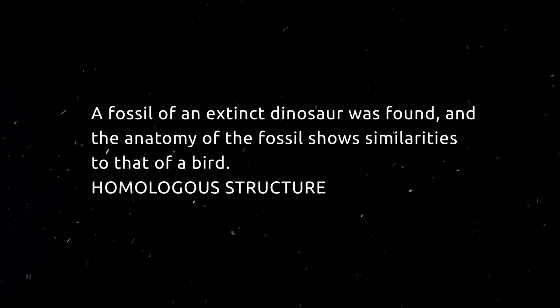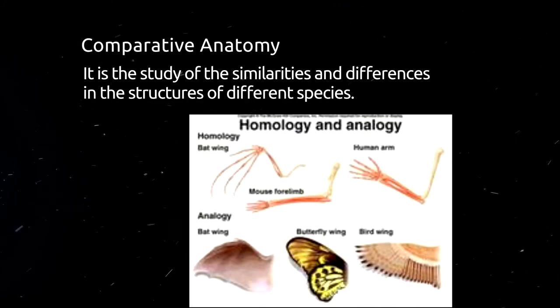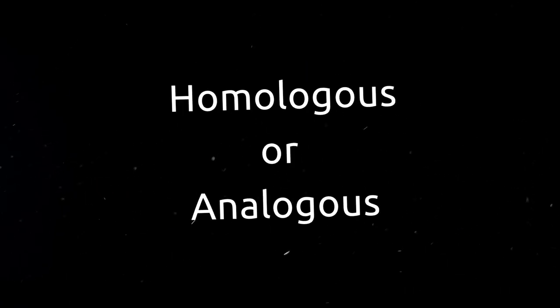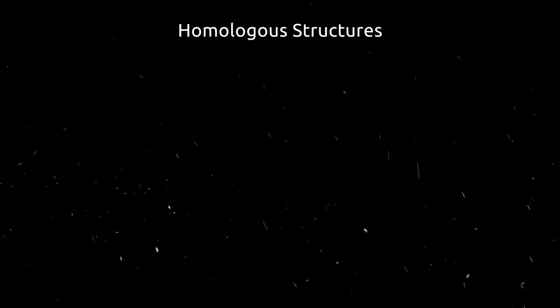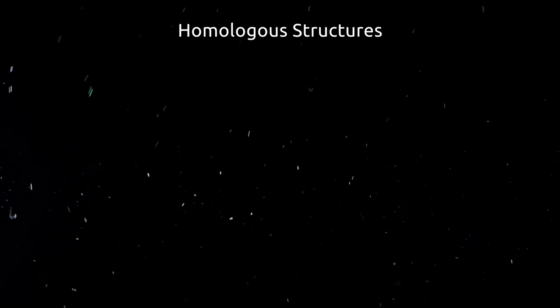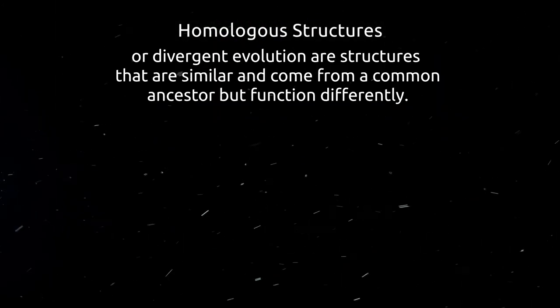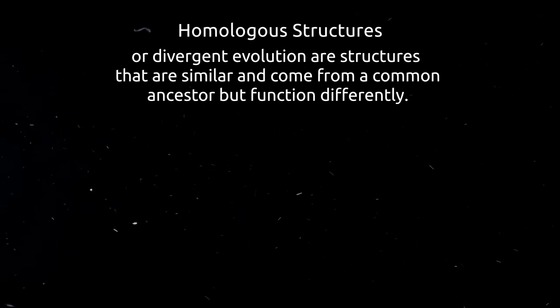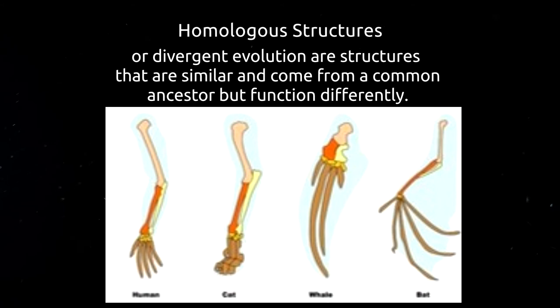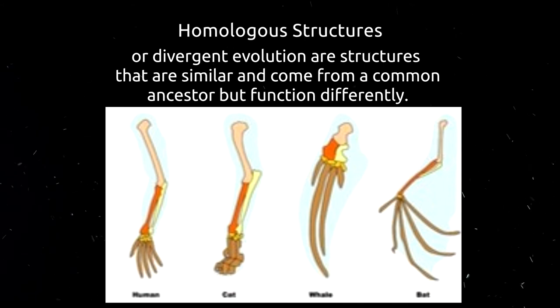The second evidence of evolution is comparative anatomy — the study of the similarities and differences in the structures of different species. Body structures can be homologous or analogous, and these two provide evidence for evolution. Studying anatomy allows scientists to identify homologous structures across diverse groups of related organisms, such as the leg bones or forelimbs. Homologous structures, also called divergent evolution, are structures that are similar and come from a common ancestor but function differently. The figure shows the hands of several different mammals — as you can observe in their bony structures, they have a similar pattern of bones; however, the functions of these are different.